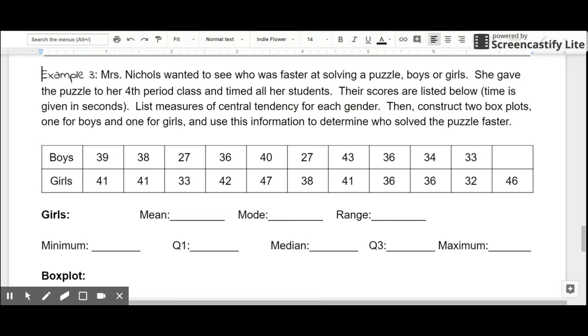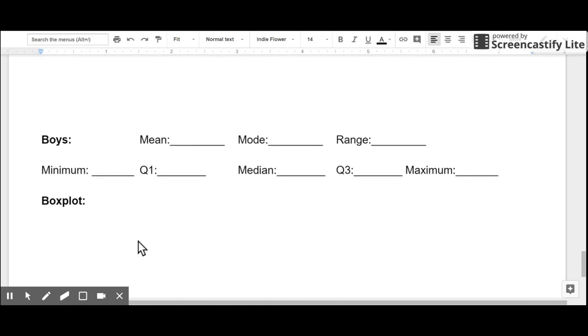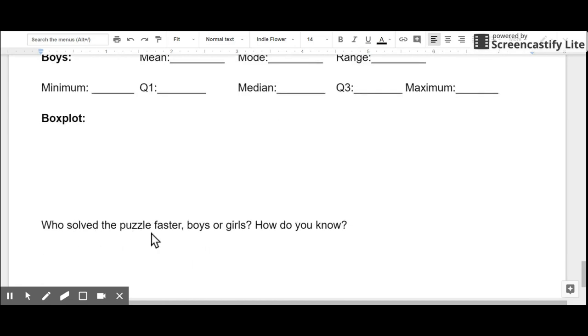It's time for you to apply these skills on your own. Example three says, Mrs. Nichols wanted to see who was faster at solving a puzzle, boys or girls. She gave the puzzle to her fourth period class and timed all her students. Their scores are listed below. Time is given in seconds. List measures of central tendency for each gender. So as a reminder, that's your mean, median, mode, and range. Then construct two box plots, one for boys and one for girls, and use this information to determine who solved the puzzle faster. So you're going to be calculating your measures of central tendency up here and also your measures of variability down here. And then comparing the two data sets with box plots. Using the box plots, you'll need to say who solved the puzzle faster, boys or girls. Please support your reasoning.